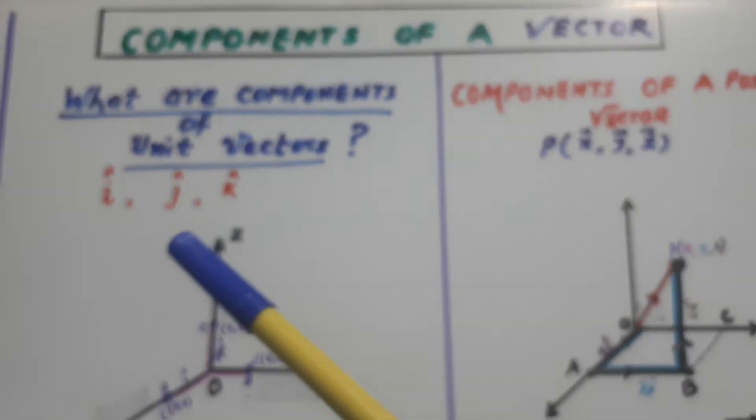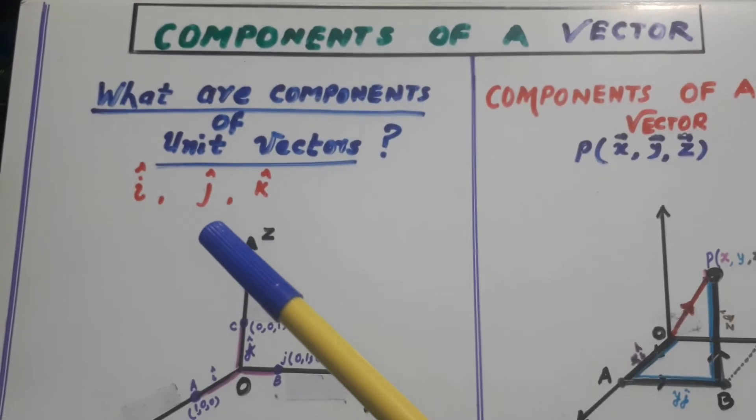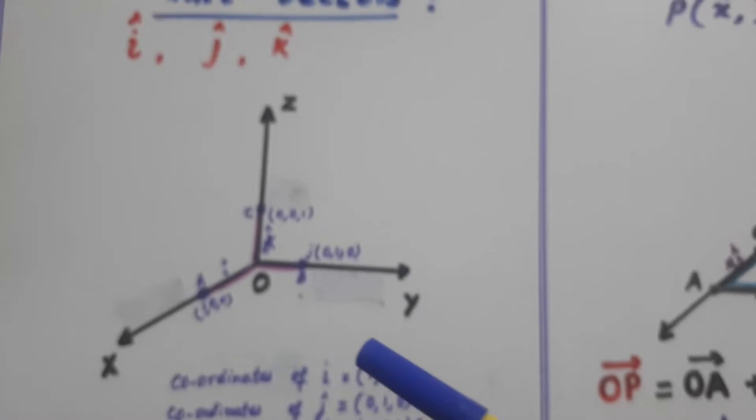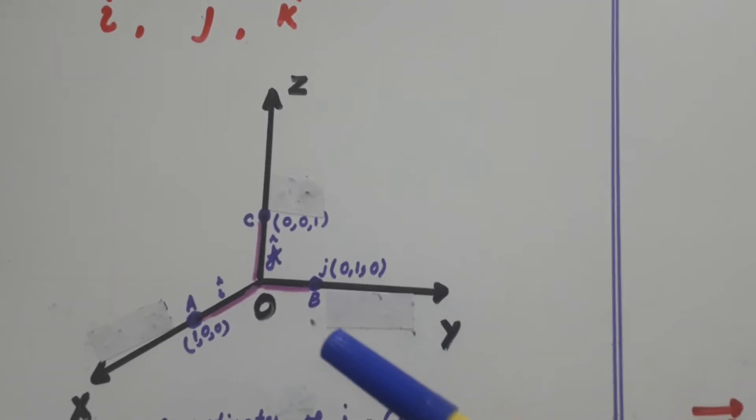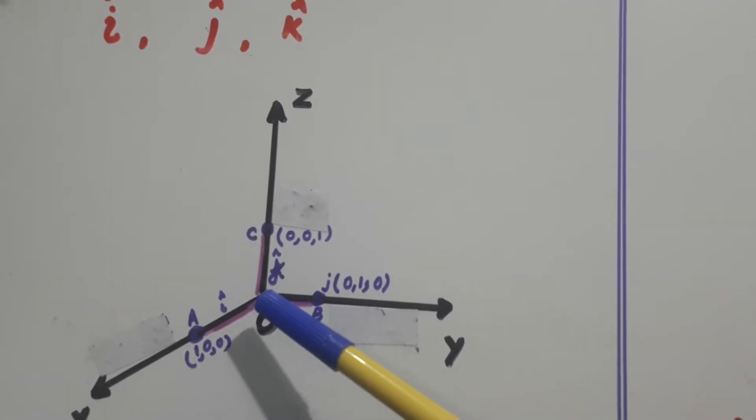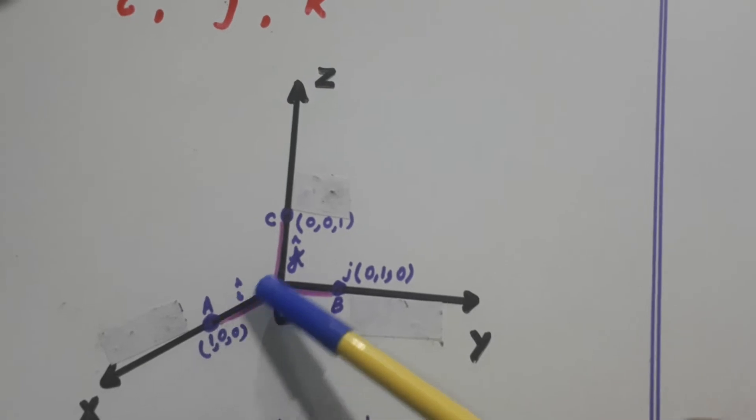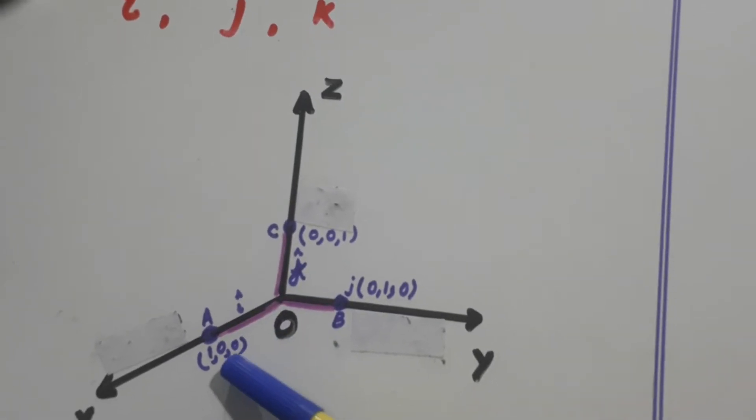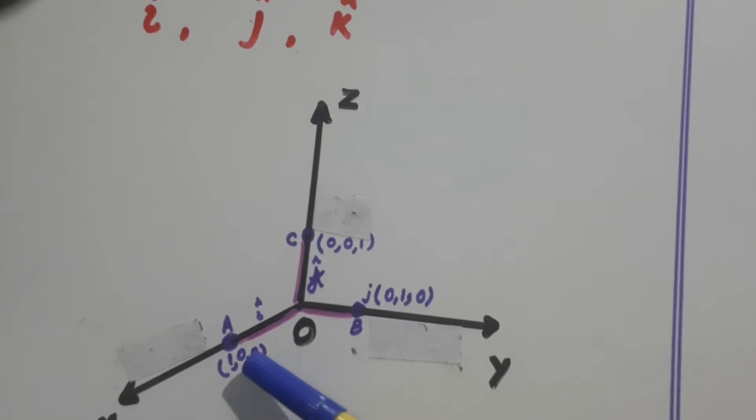Unit vectors are i, j cap, k cap. Now look here. This is one unit here on x-axis. This is i cap. And its coordinates are 1, 0, 0.